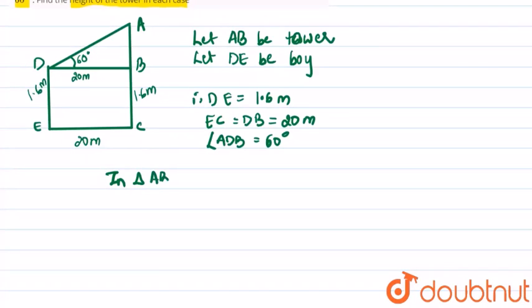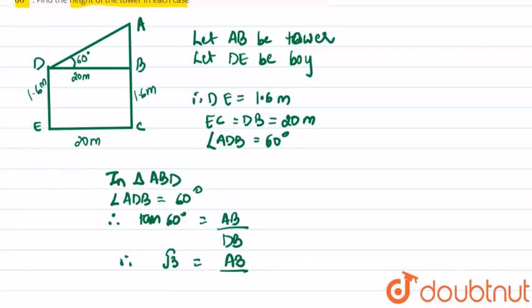In triangle ABD, angle ADB equals 60 degrees. Therefore, tan 60 degrees equals AB upon base DB. Therefore, tan 60 degrees, which is root 3, equals AB upon DB, that is 20 meters.